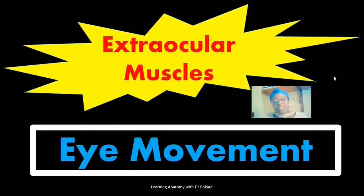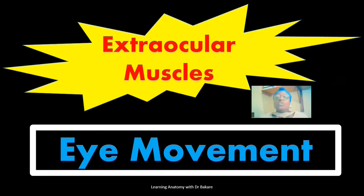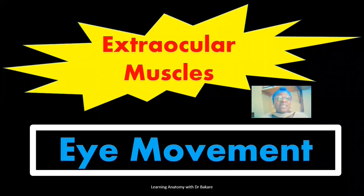Welcome back to my channel. If you are visiting this channel for the first time, you are also highly welcome. In this lecture, I'll be looking at the extraocular muscles. The extraocular muscles are muscles that connect the eyeball to the surrounding bones that form the bony orbit. These muscles are primarily involved in the movement of the eyeball. We'll cover the anatomy of the extraocular muscles, the movements of the eyeballs they exhibit, and also their innervations.